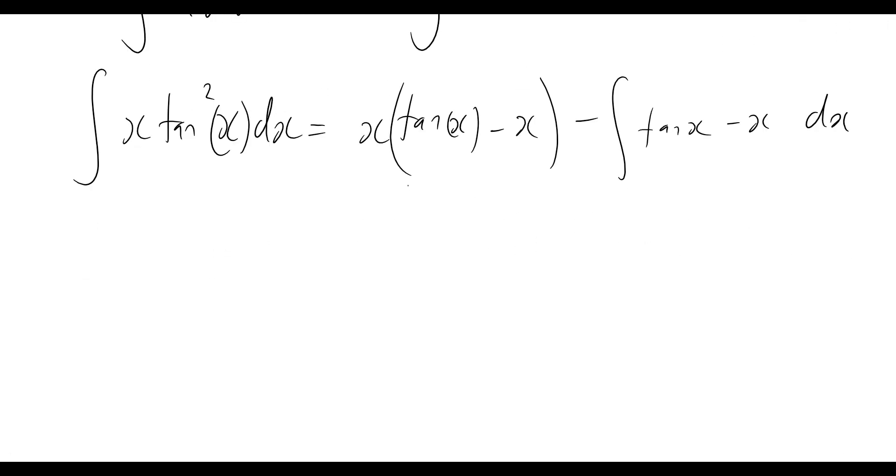And so when we expand this bracket out, let's see what we get. So we'll now have x tan x minus x squared, now minus the integral of tan x. So we know the integral of tan of x is normally minus the natural log of cos of x, but because we've already got that negative sign out the front, we know that it will now just become plus the natural log of cos of x. And then lastly, integrating minus x, but again negative out the front, so that will become plus x squared over 2. And then of course, plus c, can't forget that.